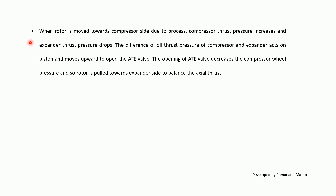When the rotor moves towards the compressor side due to process conditions, compressor thrust pressure increases and expander thrust pressure drops. The difference in oil thrust pressure between compressor and expander acts on the piston and moves it upward to open the AT valve. Opening the AT valve decreases the compressor wheel pressure, so the rotor is pulled towards the expander side to balance the axial thrust.